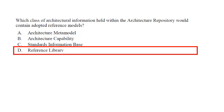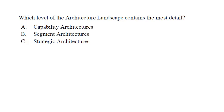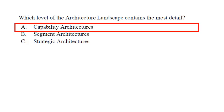Question 10: Which level of the architecture landscape contains the most detail? Options: A) capability architecture, B) segment, C) strategic. Capability architecture contains the most detail. I have explained this in my videos.